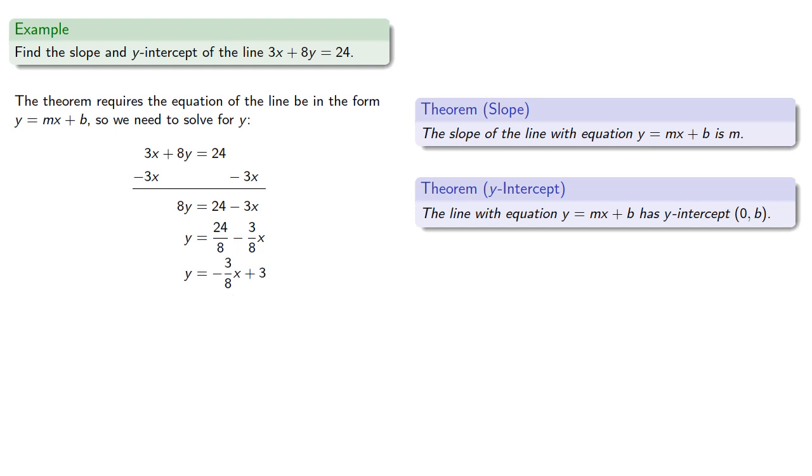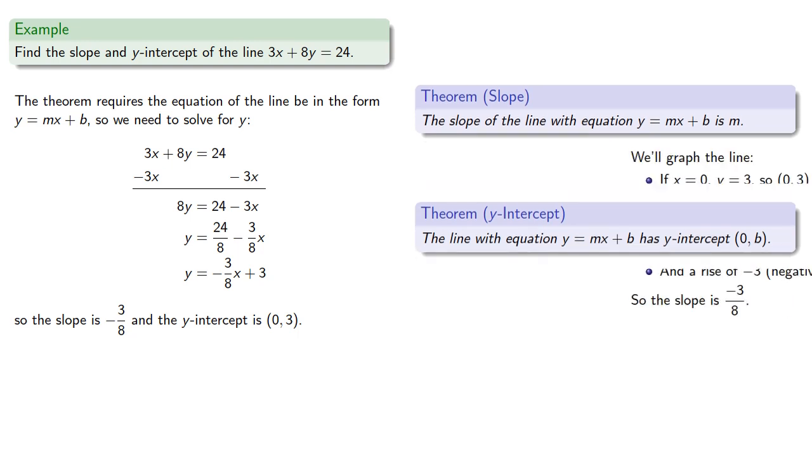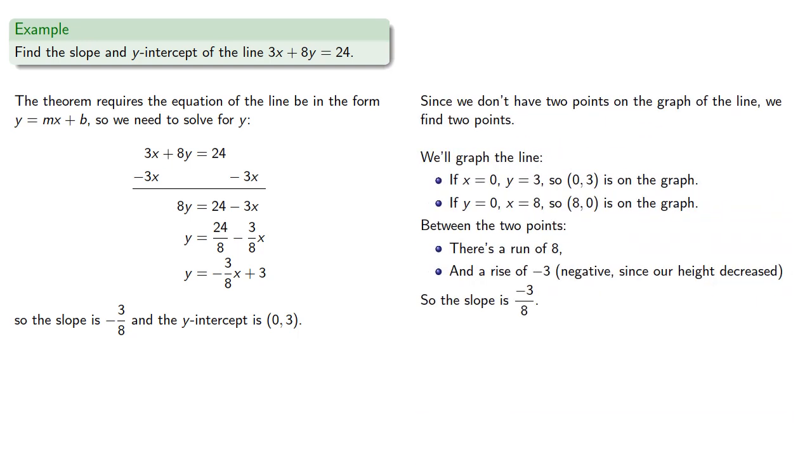And so now we can use the theorem. The slope is the coefficient of x, negative 3 eighths, and the y-intercept is 0, 3. Now, you might compare that to the solution we got earlier. So, it's important not to rely too much on the formula, because sometimes that will make you do a lot of extra work.